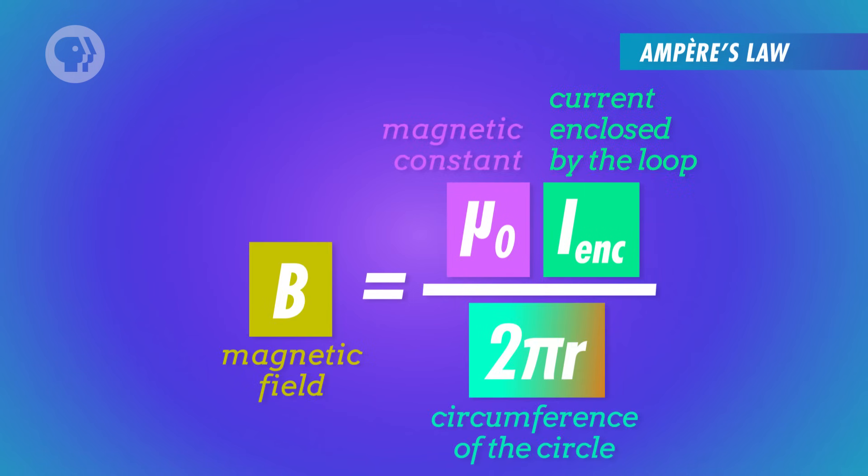So, for a long straight wire, B is equal to the magnetic constant times the enclosed current divided by 2 pi r. The equation for the magnetic field along a circle surrounding one wire turned out to be really important for Ampère, when he was trying to figure out what was going on with two wires.